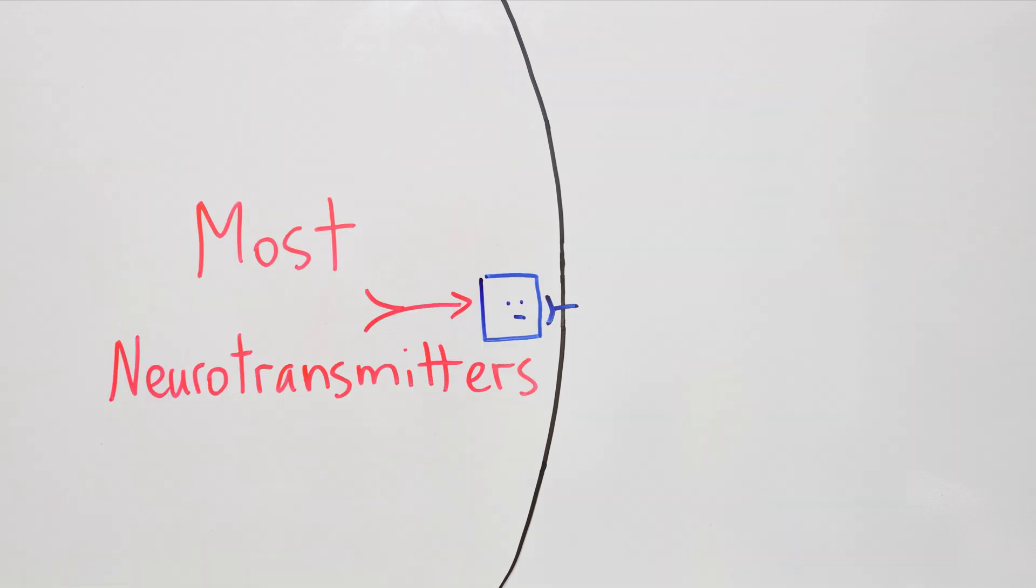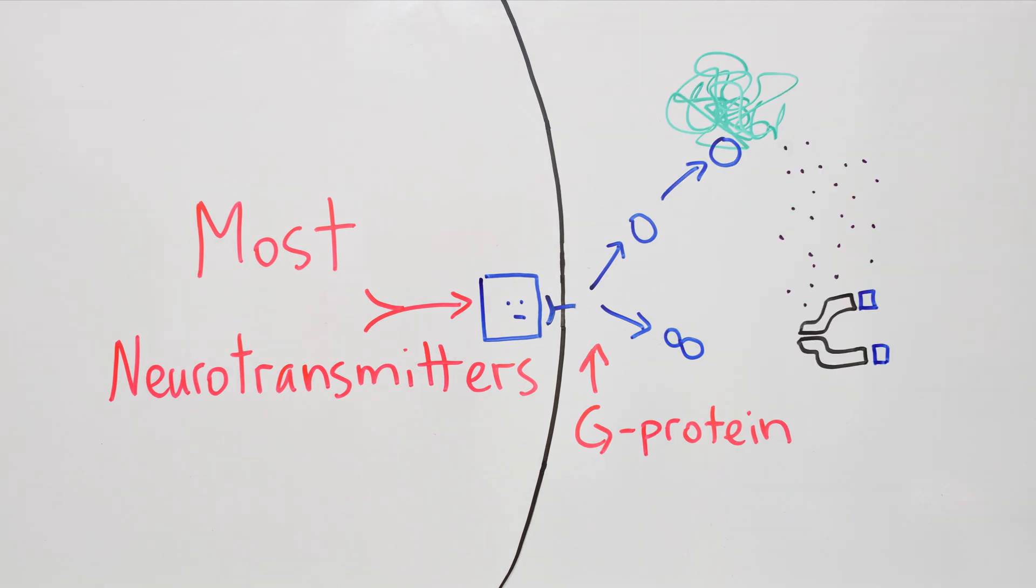Or this receptor could have been coupled to a messenger protein called G-protein, and when the neurotransmitter would have bound to that, the G-protein would have detached and kicked off a chemical chain reaction that could have done, well, anything. Either way, the neurotransmitter pressed the button, delivered the message and was ready to return.